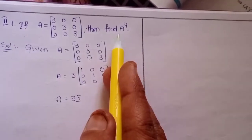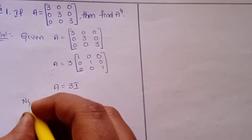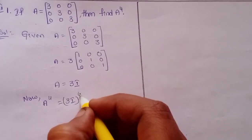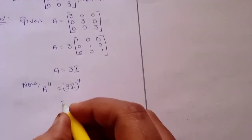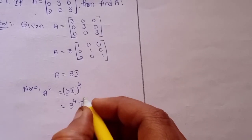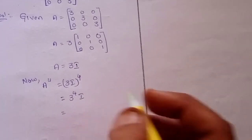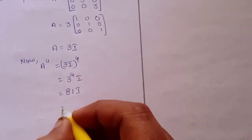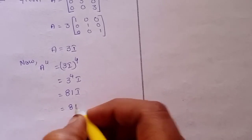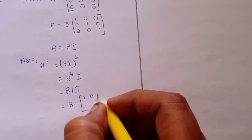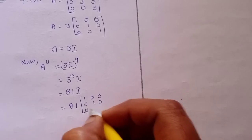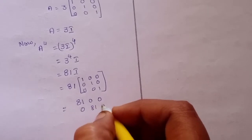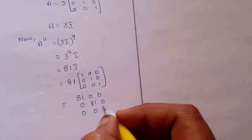Now we find A to the power 4. A^4 equals (3I)^4 equals 3^4 times I. Since I^4 equals I, this gives 81 times I. You can write it as the matrix [81,0,0 / 0,81,0 / 0,0,81]. That is A^4.